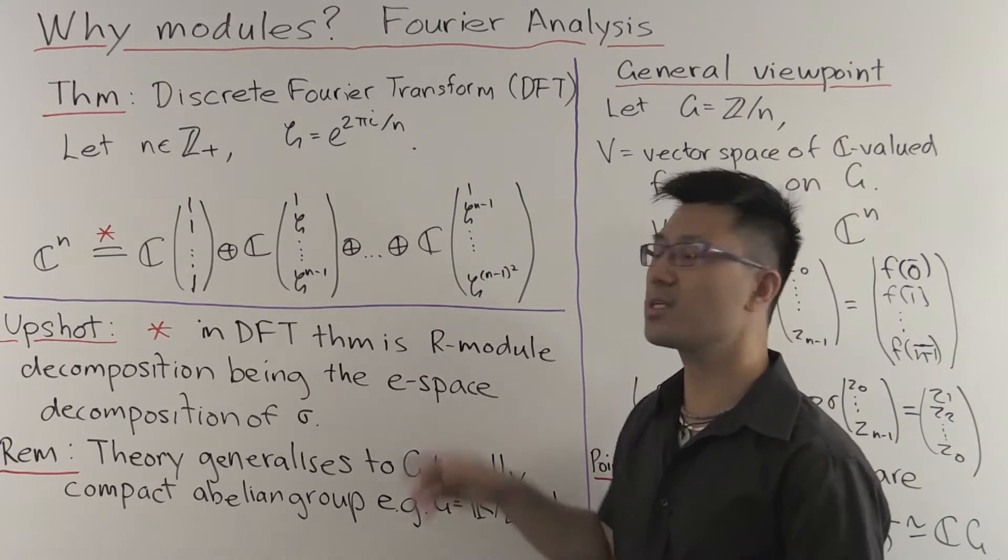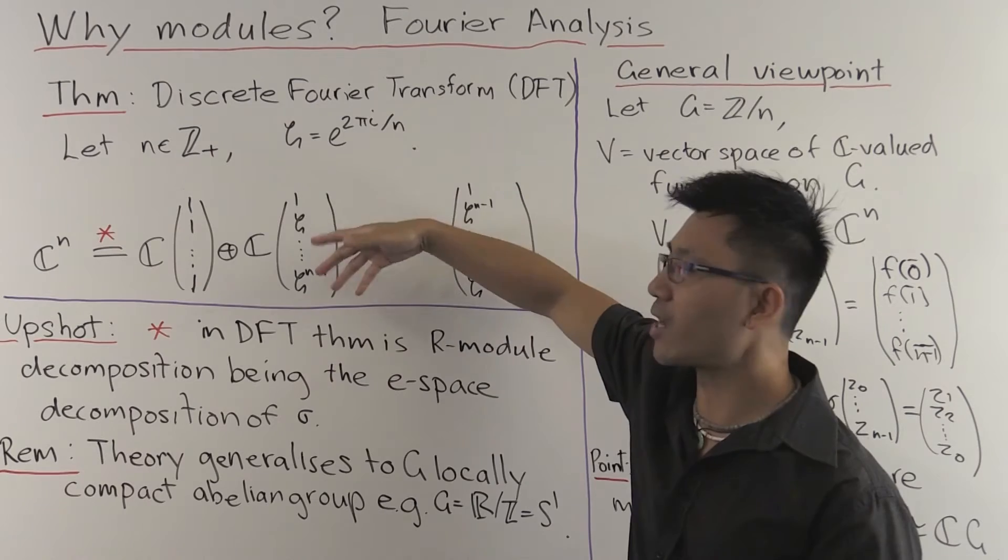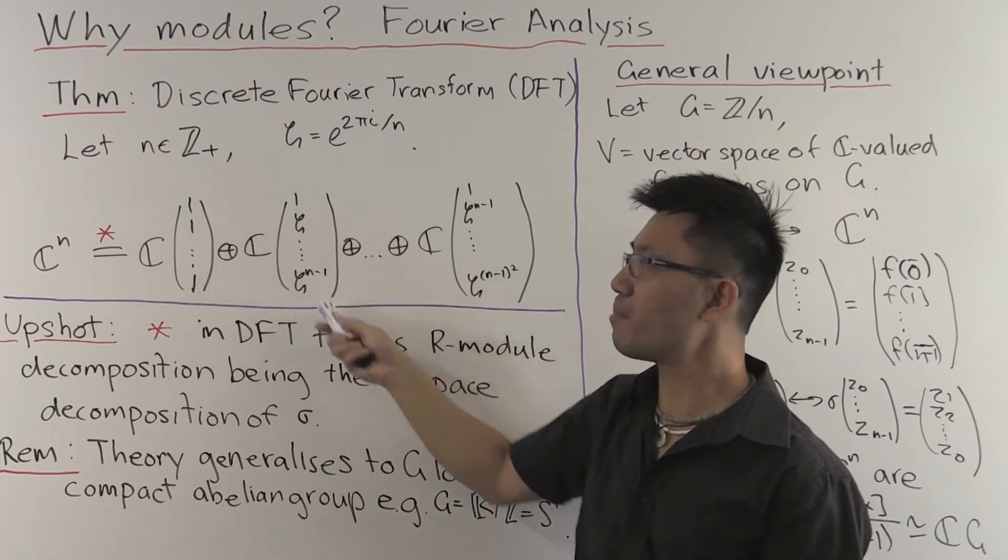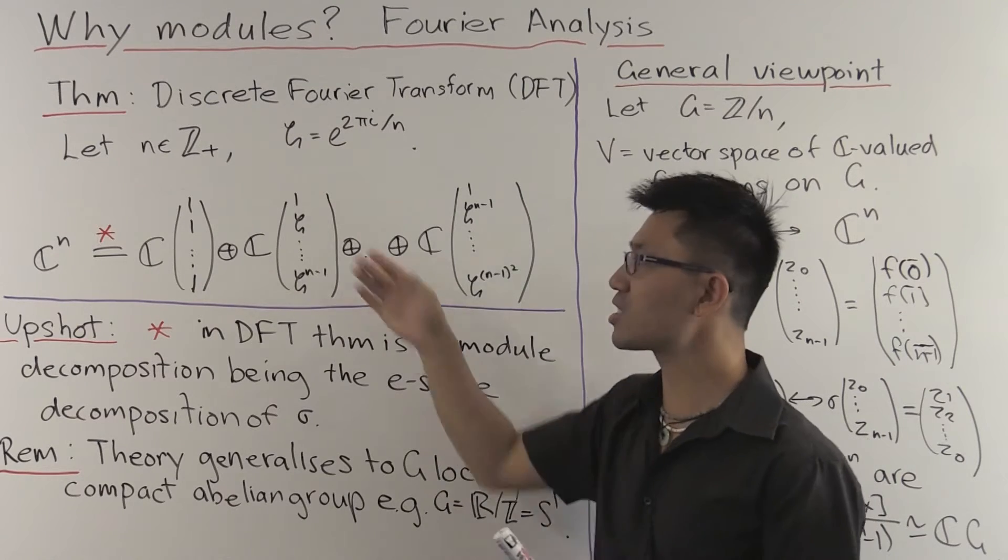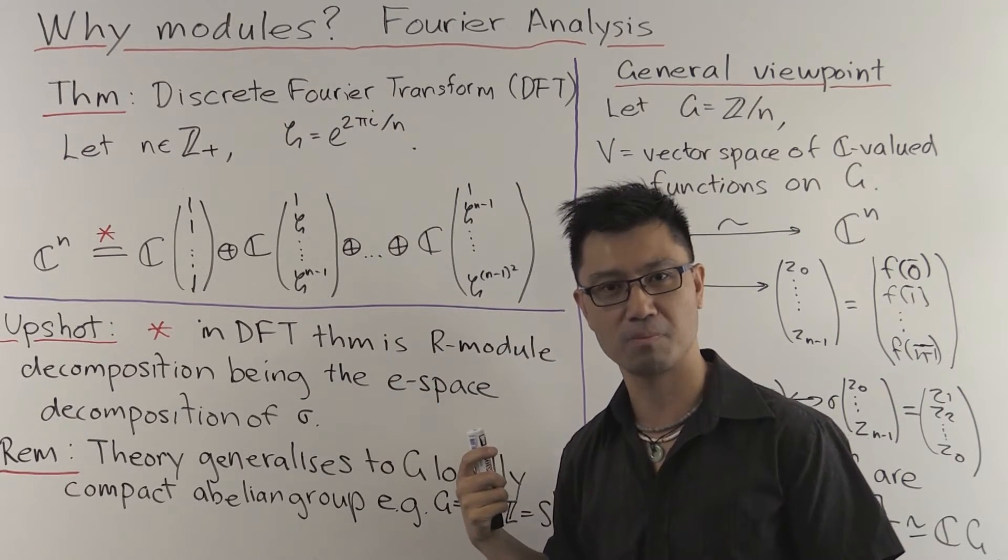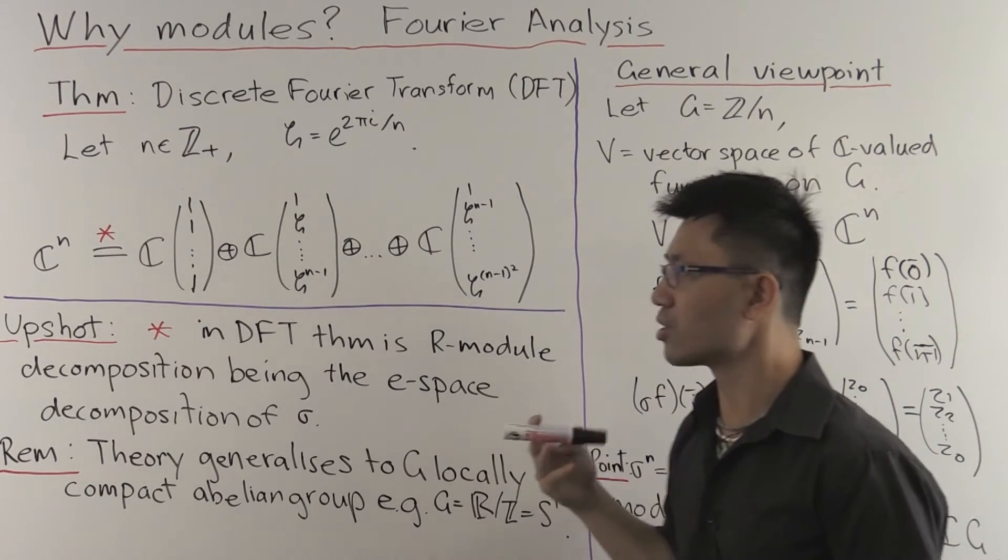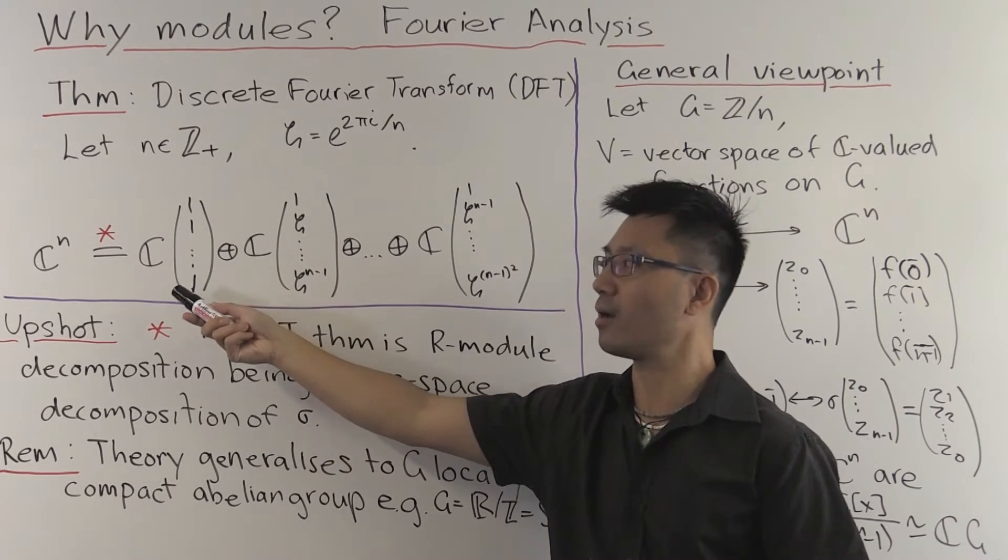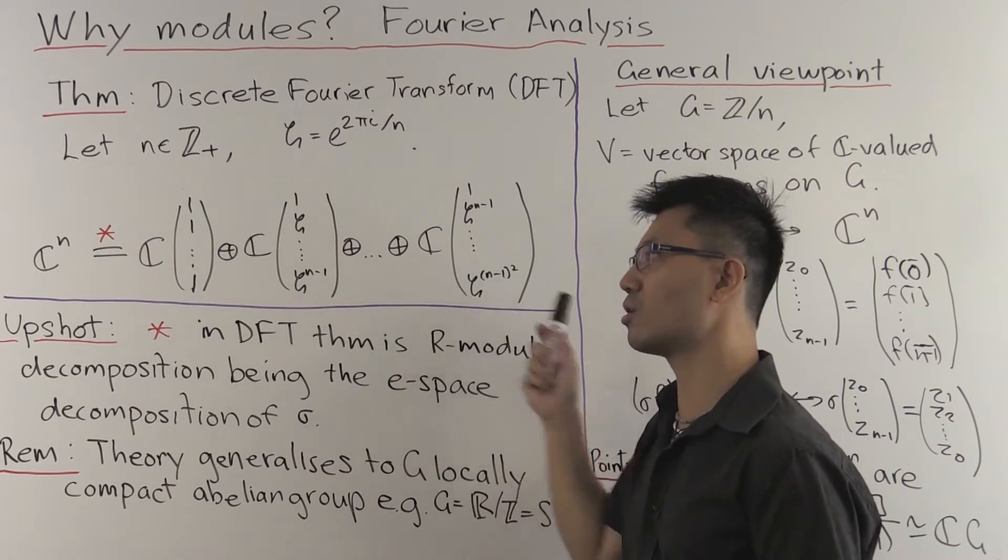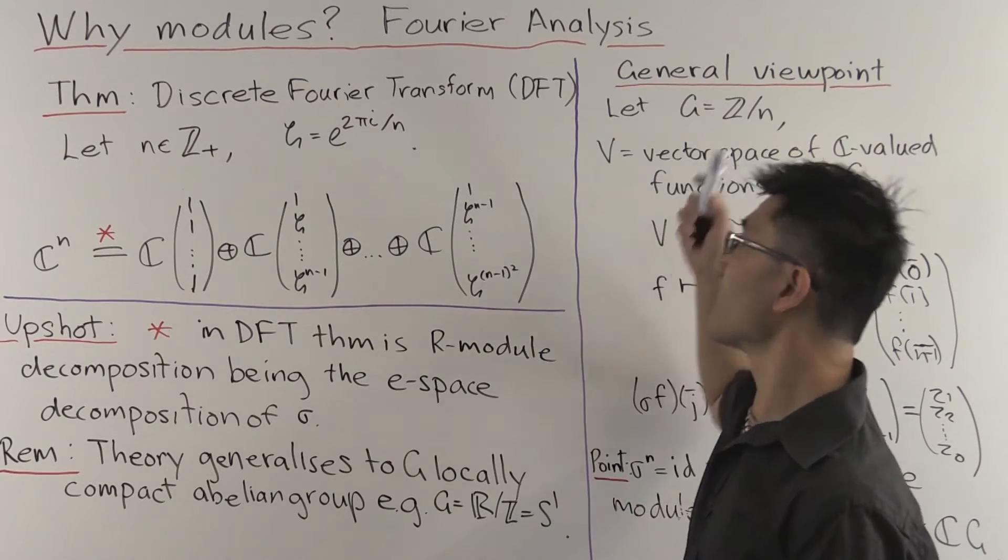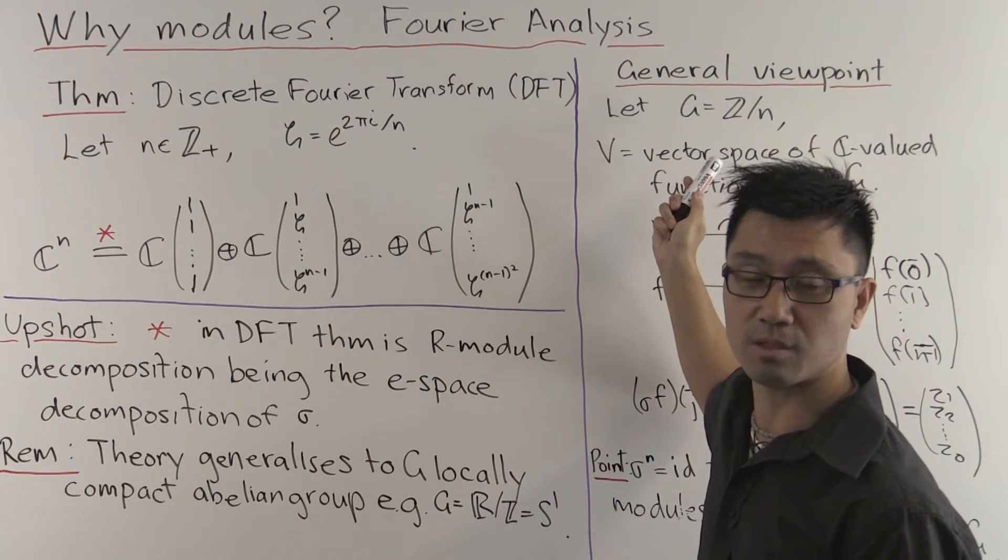And the point is that this is actually a σ eigenspace decomposition for C^n. And why is that? Let's just check quickly. Well, what does σ do? It just cycles the entries around. But these are geometric progressions. So if you slide them all up, they just get multiplied by the common ratio. So that explains how module theory singles out this decomposition of C^n as a nice one, because it is the most compatible with the symmetry that's involved.